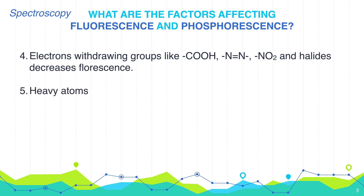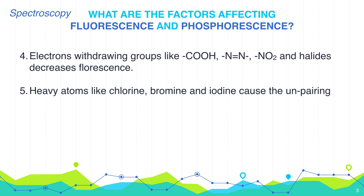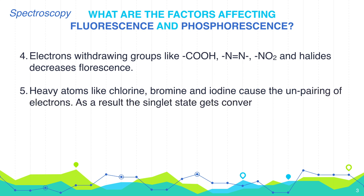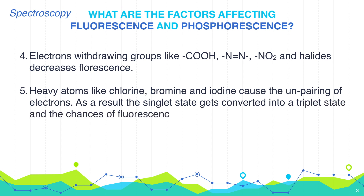Heavy atoms like chlorine, bromine, and iodine cause the un-pairing of electrons. As a result, the singlet state gets converted into a triplet state, and the chance of fluorescence occurring is greatly reduced.